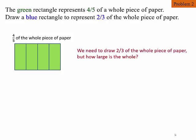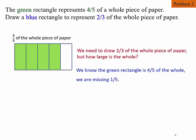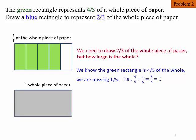Now, we need to draw two-thirds of the whole, but how large is the whole? Since we already have four-fifths, all we need is one more fifth. If we add that one-fifth, now we have the whole piece of paper.